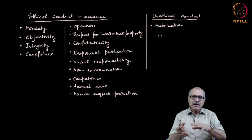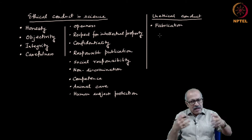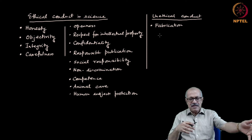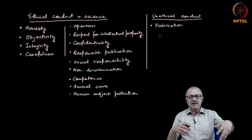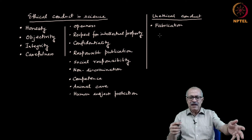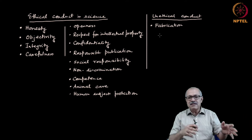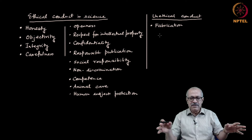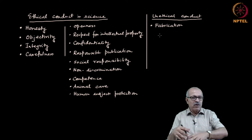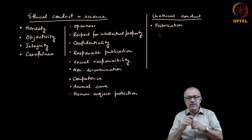Sometimes scientists fall victim to such unethical practices because they believe in something and the results of the research are not pointing to that. In order to protect their belief, they fabricate their results. There have been enough instances of that happening. Scientists should not start with a belief, but the most extreme case is where results point otherwise and you still stick to the belief by fabricating the data.